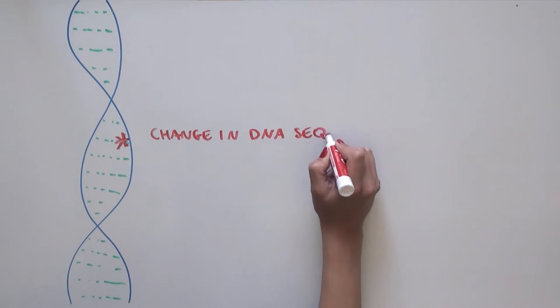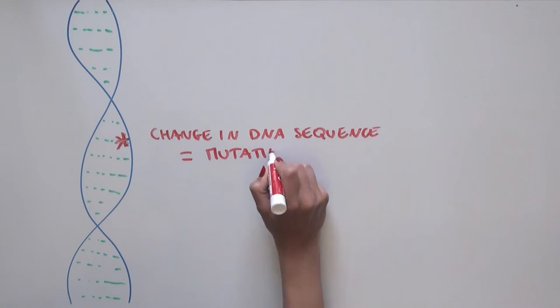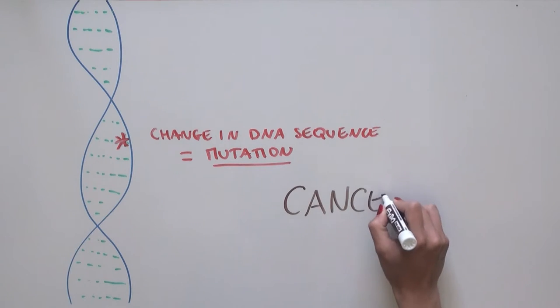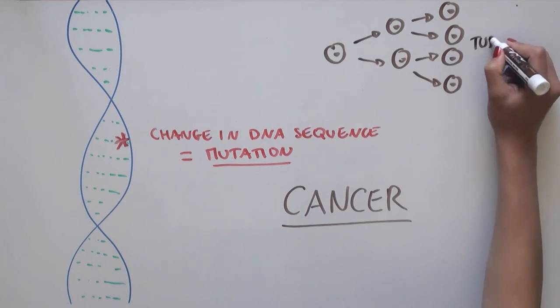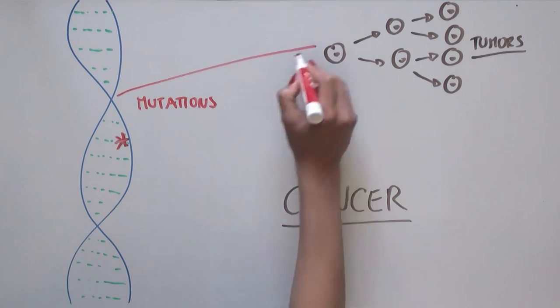Changes in the DNA sequence, which we call mutations, explains the development of one of the biggest killers in the world: cancer. Cancer cells divide uncontrollably to form tumors. This is due to mutations in their DNA sequence.